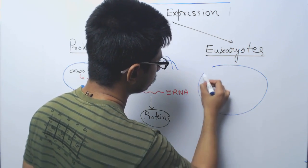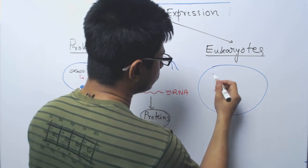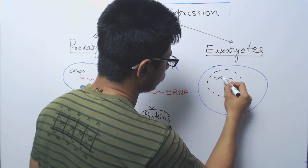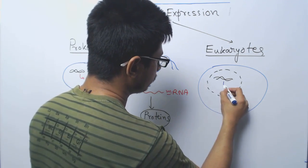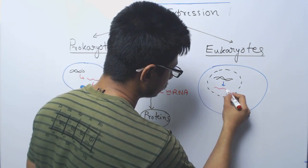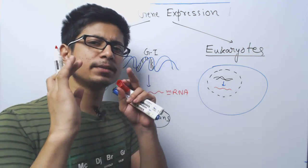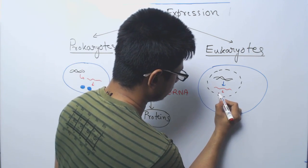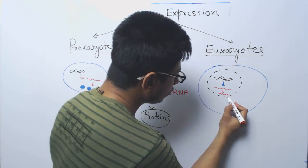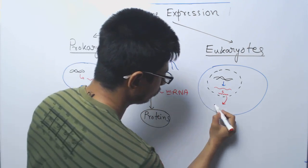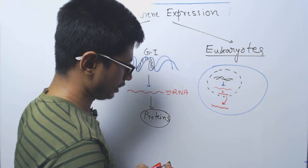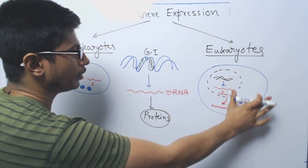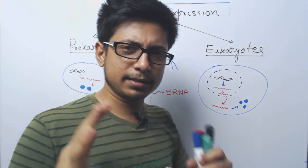In a eukaryotic cell, the DNA is found in the nucleus — a specific organelle where the DNA is completely protected. The DNA is transcribed into mRNA inside the nucleus, and then this mRNA is processed and modified in many different ways to generate a modified mRNA. This modified mRNA is then taken outside into the cytosol, where it is translated into proteins.